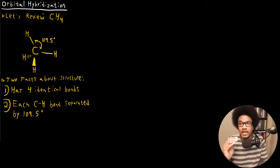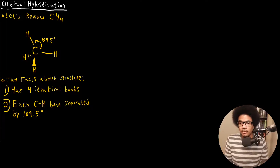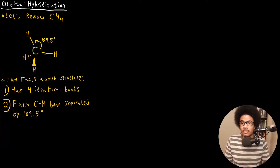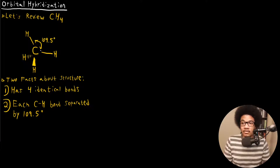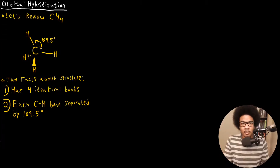I want to motivate orbital hybridization by looking at an example: CH4, methane. We've drawn this Lewis structure, and from what we learned in the previous unit, we know what its three-dimensional orientation looks like. CH4 has a tetrahedral structure where all of the C-H bonds are separated by a bond angle of 109.5 degrees. This is the three-dimensional geometry you get from knowing the Lewis structure and applying VSEPR theory.